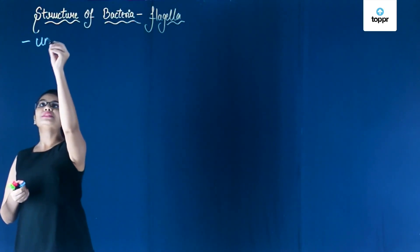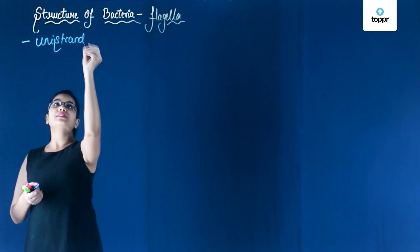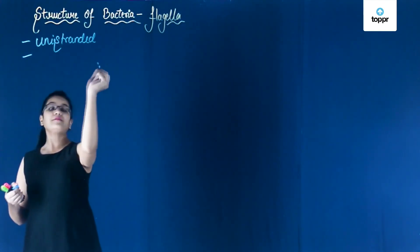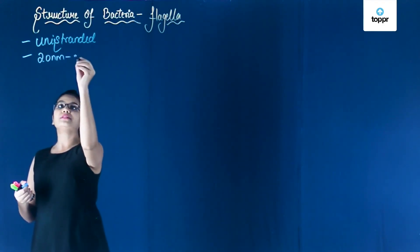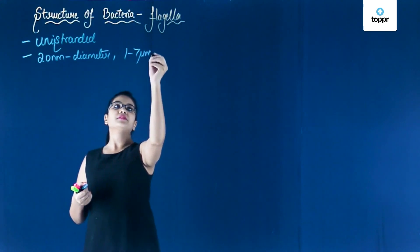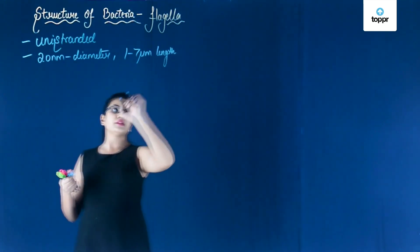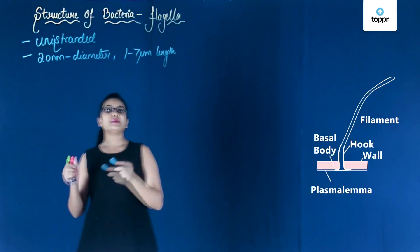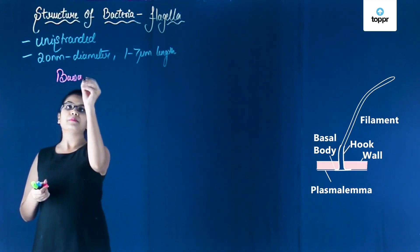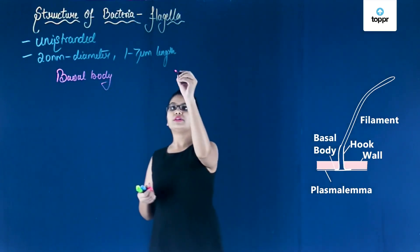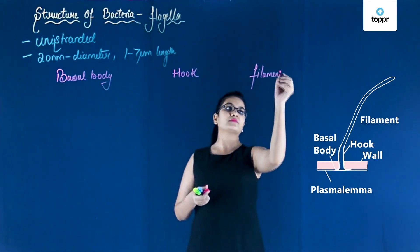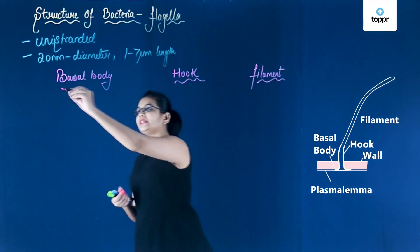The flagella is unistranded, and this unistranded flagella is basically equivalent to a single microfibril. The size of flagella is 20 nanometers in diameter and 1 to 7 micrometers in length. The bacterial flagella is composed of three parts: the first part is called the basal body, the second part is called the hook, and the third part is called the filament.